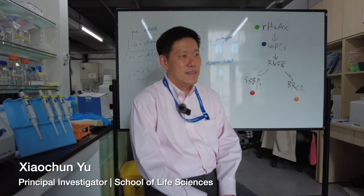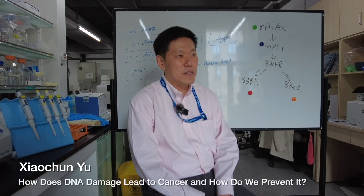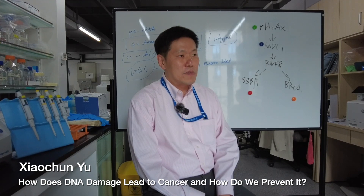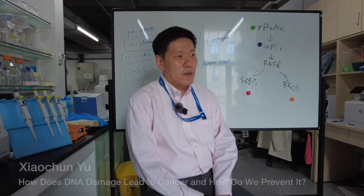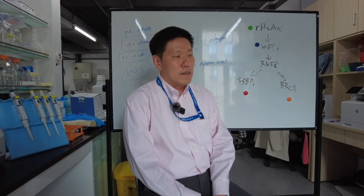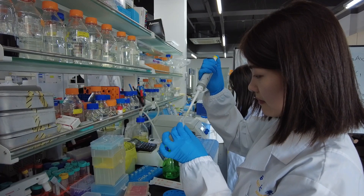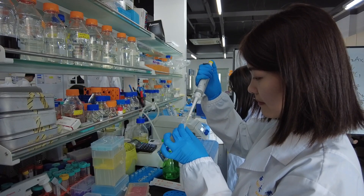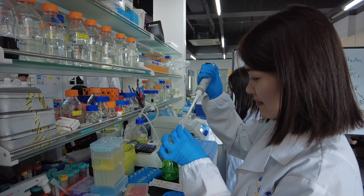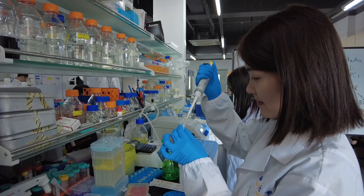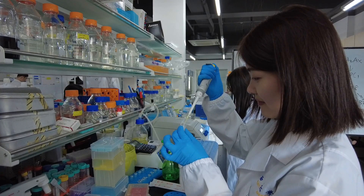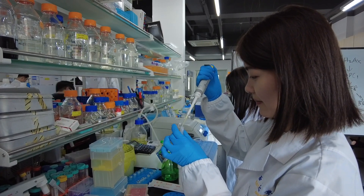Tell us about what exactly is DNA damage and what causes it. DNA is a genetic material which is important for our lives. However, the DNA can very easily be damaged. There are a lot of hazards, such as environmental hazards and internal hazards. Environmental hazards include UV, ionizing radiation, and many types of chemicals. Internal hazards include free radicals that are generated during cell metabolism.